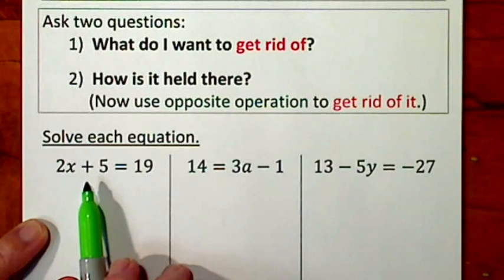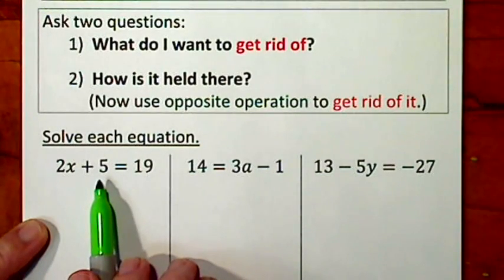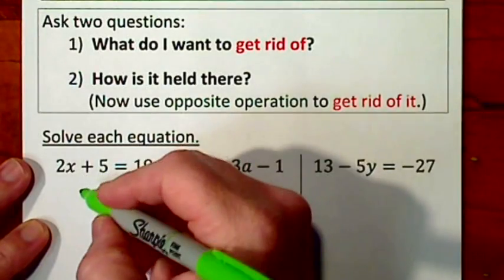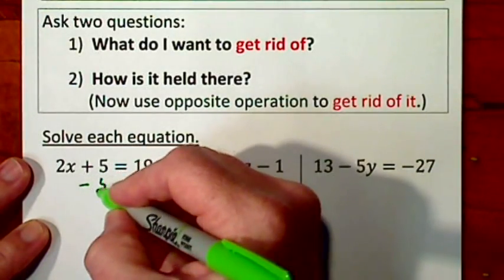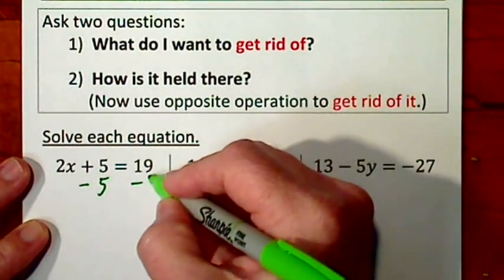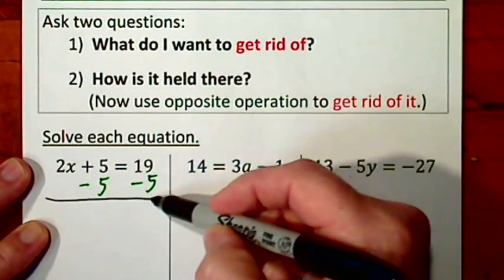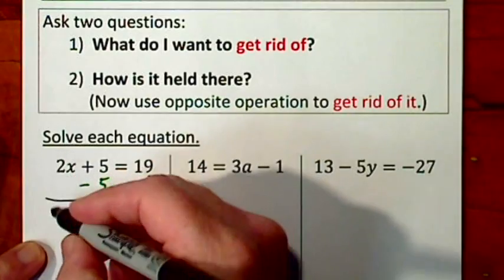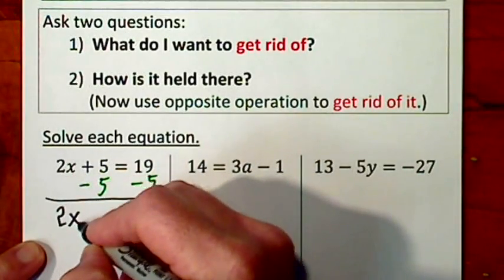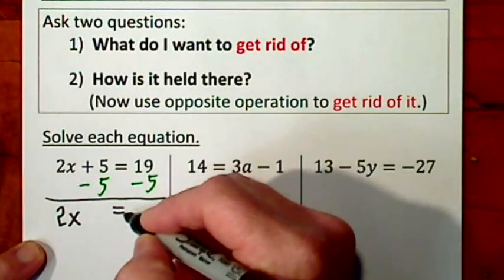It's almost like order of operations in reverse. So I'm going to get rid of the 5. I'll use a negative 5, put a negative 5 on the other side of the equal, draw a line, and bring down what's left. You have 2x, that's a zero, don't bother to write it.